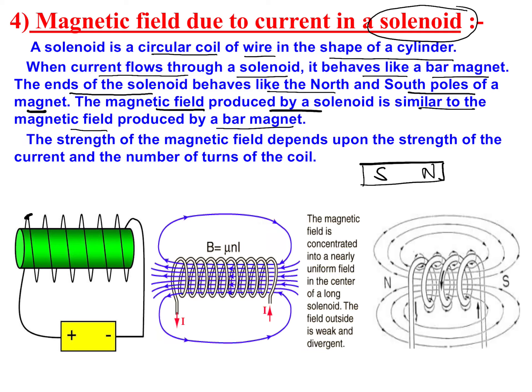If the solenoid arrangement behaves like a bar magnet, obviously the magnetic field lines will be like a bar magnet. This means the north pole is where field lines emerge, and the south pole is where they enter.